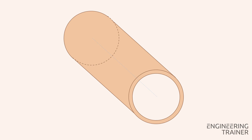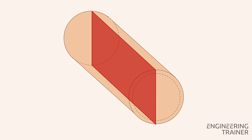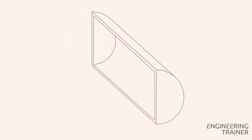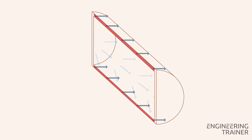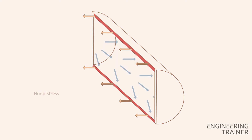We again consider a piece of piping but now with closed ends. We cut the pipe in half to view the inside. The pressure in the piping works on the inner surface causing a force that pulls the pipe apart in the circumferential direction. This force is counteracted by the material and as a result of this mechanism a hoop stress is present in the pipe wall.